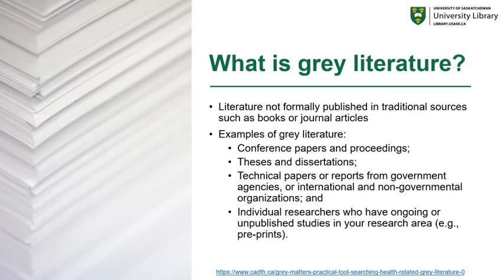To begin, we want to talk a little bit about what gray literature is. Gray literature is that which is not formally published in traditional sources such as books or journal articles. Examples of gray literature might include conference papers and proceedings, theses and dissertations, technical papers or reports from government, international, or non-governmental organizations, as well as research being published by individual researchers who have ongoing or unpublished studies — for example, preprints.